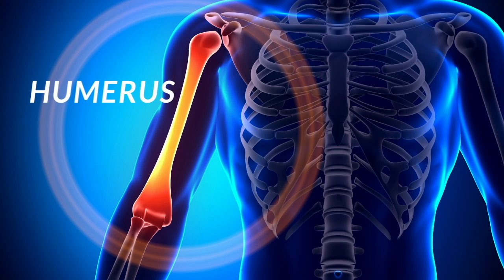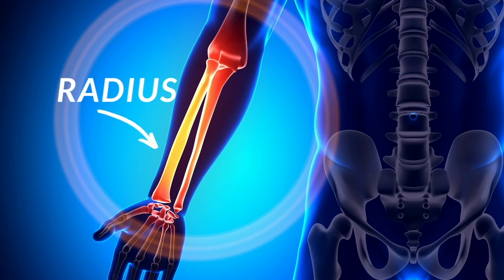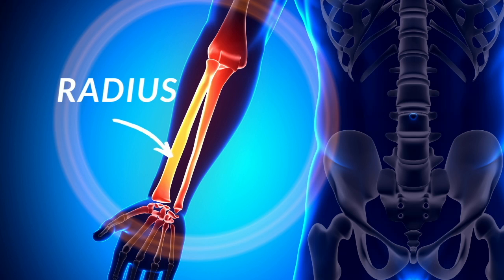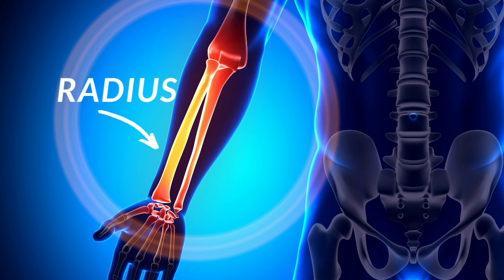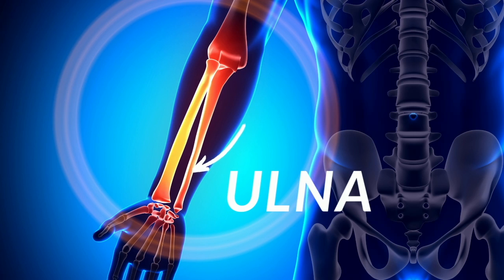Next we have two bones in the lower portion of your arm. The first one is called the radius — that's the top bone. Your ulna is on the bottom; you can remember U for under if that helps you. You can also remember that your radius is where the radial pulse side is, while the ulna is on the other side.